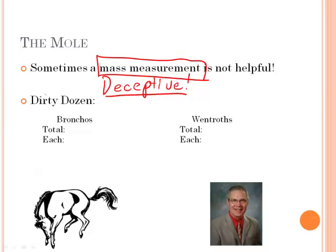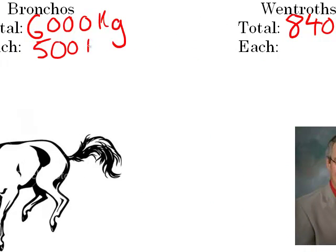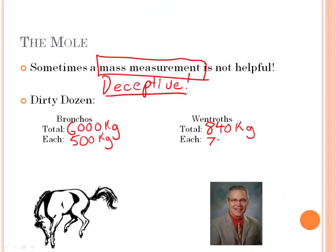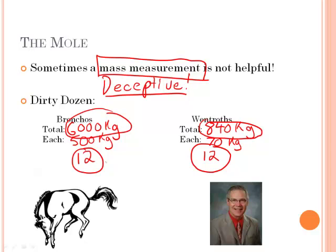For instance, say if I was talking about a particular amount of broncos. Let's say we had 6,000 kilograms of broncos and we were going to compare that to about 840 kilograms of Dr. Wintroth — if we had more than one of them. Suppose each bronco weighed 500 kilograms and each Dr. Wintroth weighed 70 kilograms. I could divide these two numbers to find out the quantity of each. 6,000 divided by 500 gives 12, and the same over here — so I still have the same quantity but different masses. That's where the idea of mass being deceptive comes in.